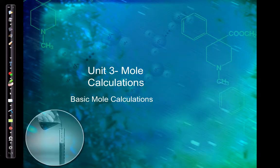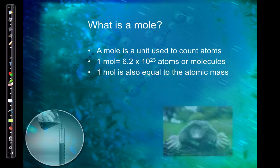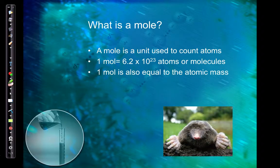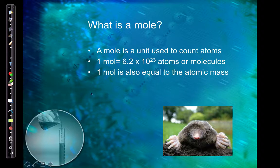In this video we are going to review mole calculations. A mole is a unit that we use to count atoms. So if we have a dozen, we have 12 of whatever that is — a dozen donuts would be 12 donuts. One mole is equal to 6.02 times 10 to the 23rd atoms or molecules.